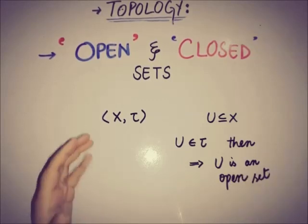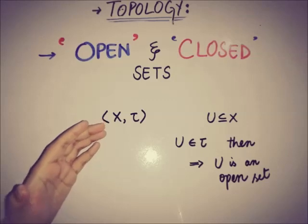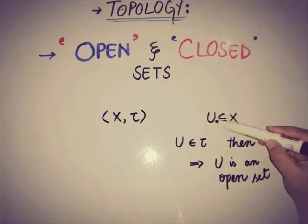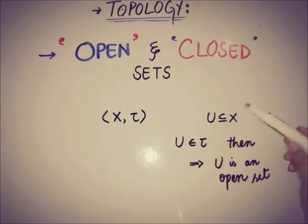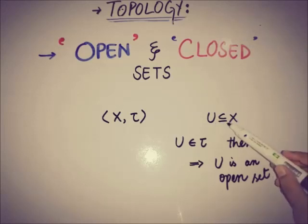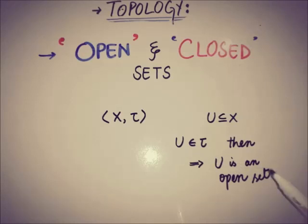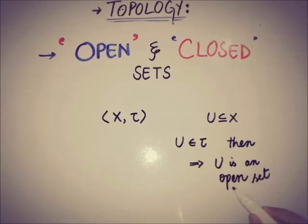Again, if we have a topological space (x, tau) and there is any random subset of x, and that random subset of x is also a member of the topological space tau, then we can say that that subset is an open subset of x.